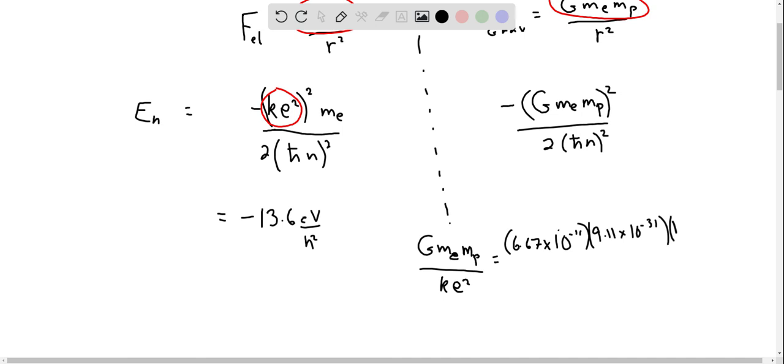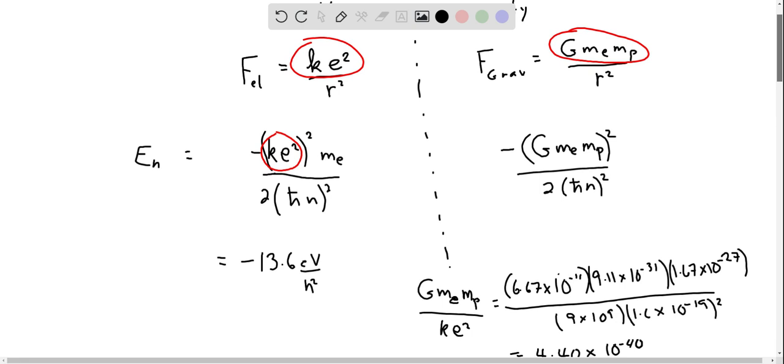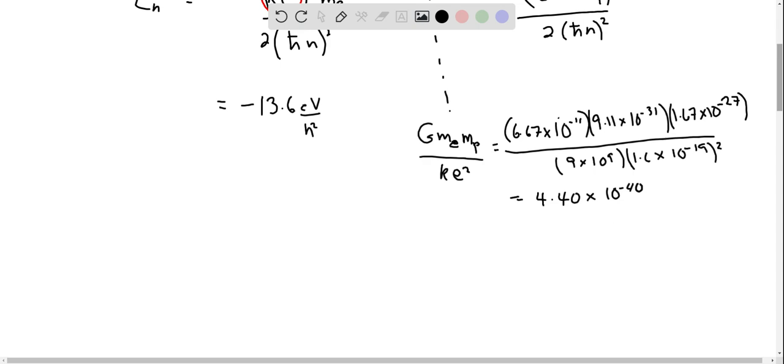So it's just a matter of looking up masses and the strength of gravity in Newton's kilogram meter squared per kilogram squared. And this particular cluster of constants, the ratio, is a small number. It is 4.40 times 10 to the minus 40. And the units should be identical. That's the nice thing in picking that cluster of constants and having both inverse squared laws.